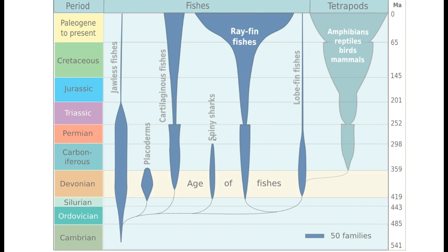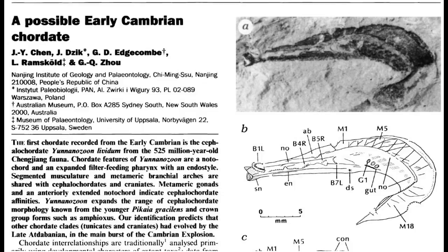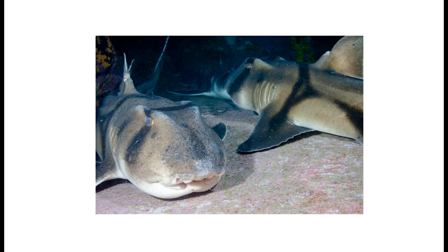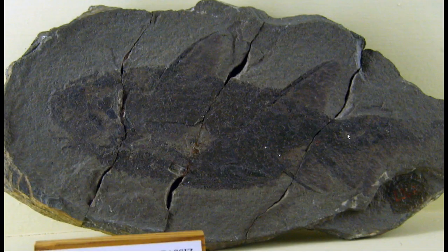There is a small group of fish called the Acanthodii, or sometimes called the Spine Sharks. They are in between the sharks and rays and the modern bony fishes in many of their characters, and they went extinct at the end of the Carboniferous. Here is a fossil of one such Spine Shark. This group was ecologically quite successful for a long period.